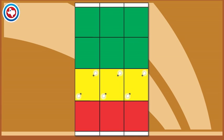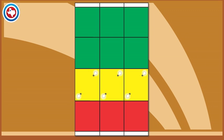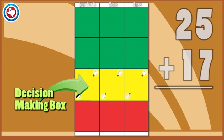Students use the transition board along with base 10 blocks to show adding and subtracting with regrouping. One row is designated as the decision making box.